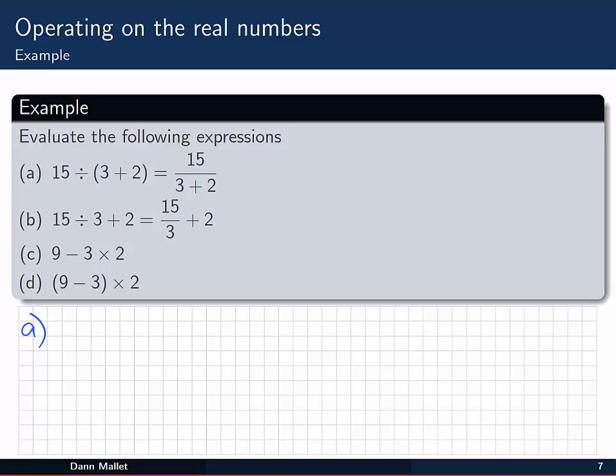So let's try it out with a few examples. Here we've got four examples where we've got to evaluate the expressions. Let's look at the first one, 15 divided by 3 plus 2. Another way of writing that is 15 over 3 plus 2. Often when we have these fractions like this, remember that the things on top and the things on bottom have implied parentheses around them, so we need to do that 3 plus 2 first. So that's exactly what I'm going to do. 15 over 3 plus 2. I'm going to say that that's 15 over 5. And 15 divided by 5 is just 3.